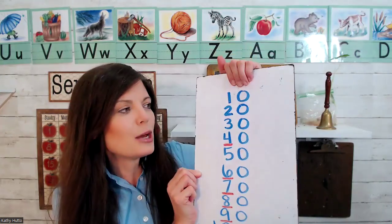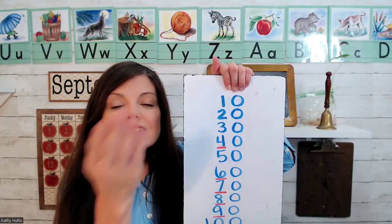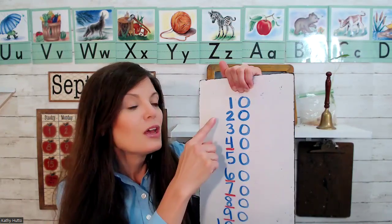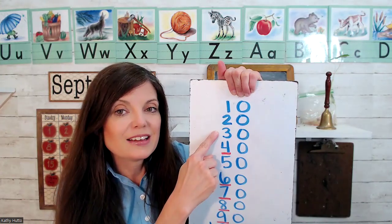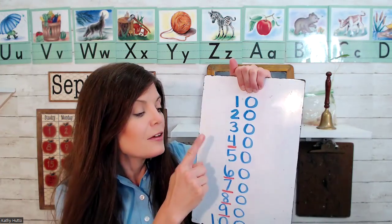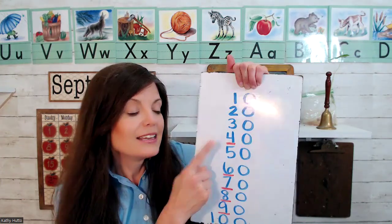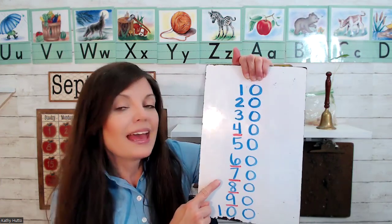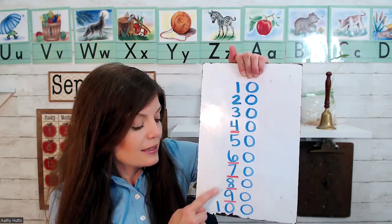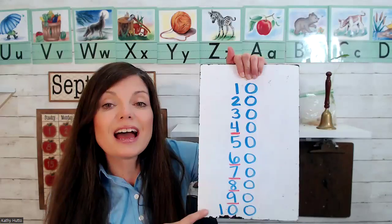But this is how you say these numbers: 10. Now your turn. 20, 30, 40, 50, 60. Repeat after me. 70, 80, 90, 100.